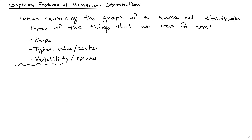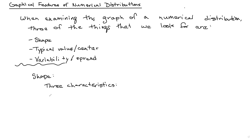This is a graph-heavy, visual-image lecture. So let's start with shape. There are three characteristics we look for for shape. Number one: is the graph symmetric or skewed?